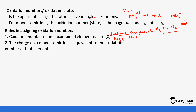The charge on monoatomic ions is equivalent to the oxidation number of that element. For example, sodium with a positive charge has oxidation number +1; aluminium with 3+ has oxidation number +3; oxygen with 2− has oxidation number −2. Remember, the difference is where the plus or minus sign is placed — in oxidation numbers it comes before the number.